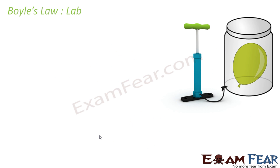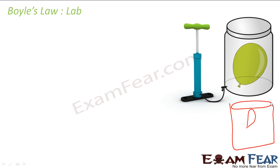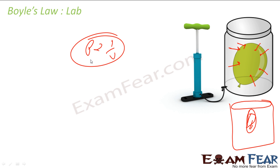To perform this experiment in the lab, you can use a jar with a pump fixed to it — make sure there is no air leakage. Put a balloon inside and fill it. Now if you pump air in, you will see that the volume of the balloon decreases. This shows pressure is inversely proportional to volume. The pressure I'm talking about is the external pressure outside the balloon — increase the external pressure and the volume decreases.